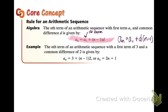An example of one is down here. a sub n equals 3 plus 2 times n minus 1. So here, your first term is 3, and your common difference is 2.